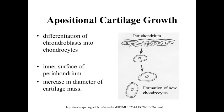It's also possible to have appositional cartilage growth — growth from the outside. Cells within the perichondrium, specifically from the inner chondrogenic layer discussed in the previous lecture, differentiate from cartilage stem cells — called chondroblasts in some books — into chondrocytes. They respond to a signal, become differentiated cartilage cells, and start adding cartilage from the inner surface of the perichondrium, pushing the perichondrium back as they increase the diameter of the cartilage mass. So: interstitial growth is from the inside, appositional growth is along the external surface.